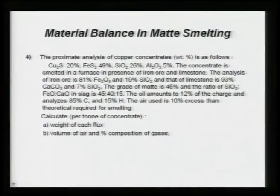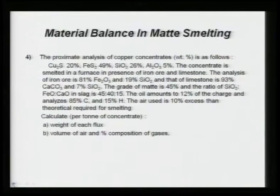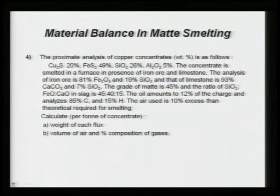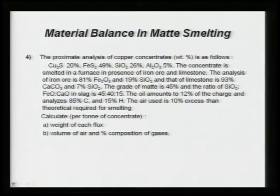Here is the next problem, Problem 4, in continuation from my previous lecture. The approximate analysis of copper concentrate is as follows: Cu₂S, FeS₂, SiO₂, and all are given. The concentrate is smelted in a furnace in the presence of iron ore and limestone, both used as fluxing agents. The grade of matte is 45 percent and the ratio of SiO₂ to FeO to CaO in slag is 45:40:15. The oil amounts to 12 percent of the charge and its composition is also given.